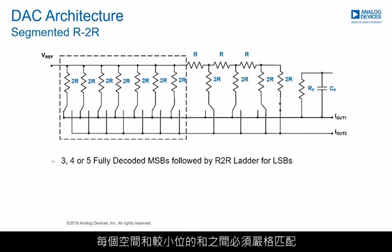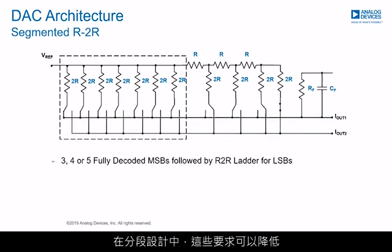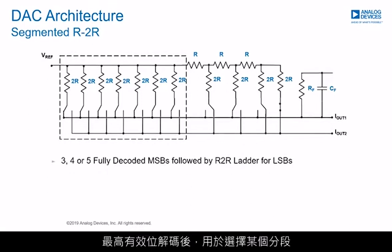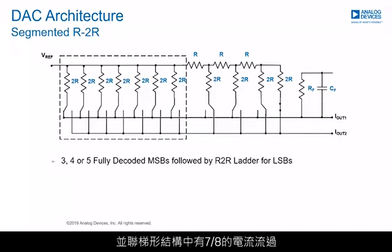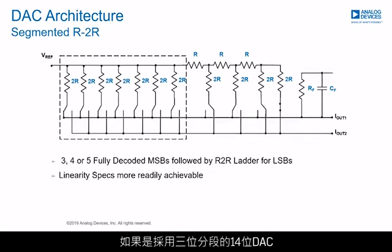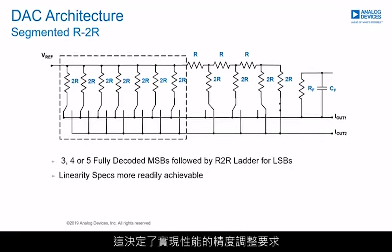In an R-2R ladder, very tight matching is required between each piece and the sum of the lesser bits to maintain monotonic behavior. In a segmented design, these requirements are relaxed, making high-resolution monotonic converters more practical. The most significant bits are decoded to select one of the segments. In the case of three-bit segmentation, seven-eighths of the current flows in the parallel ladder structure and one-eighth in the R-2R structure. For a 14-bit DAC with three bits of segmentation, the R-2R structure is effectively an 11-bit DAC, which sets the accuracy of trim required to achieve performance.